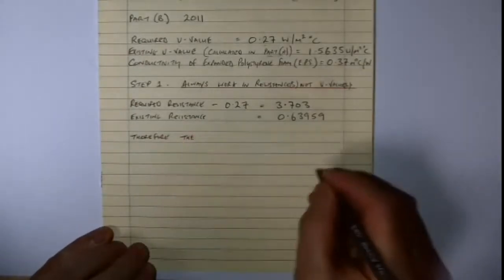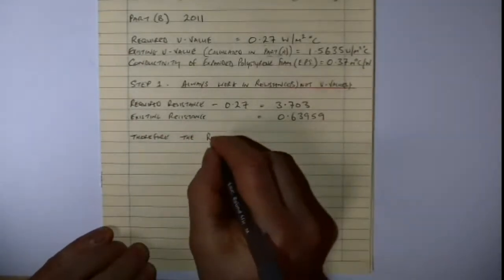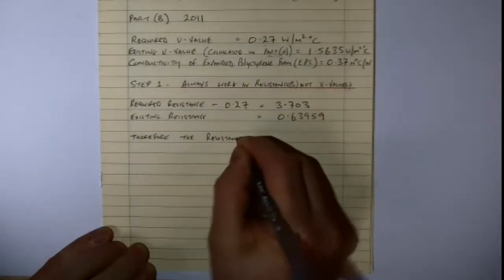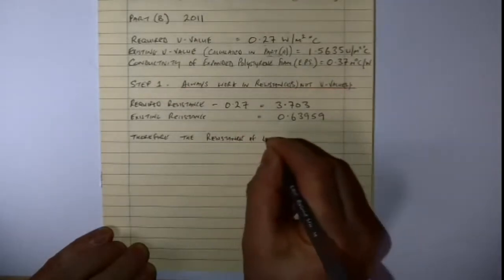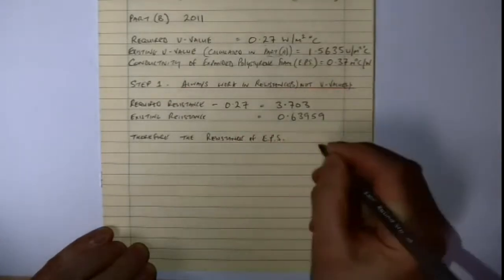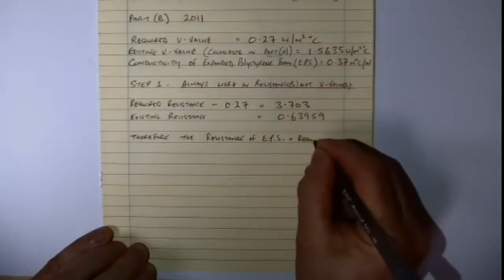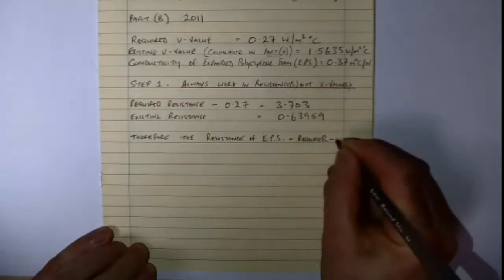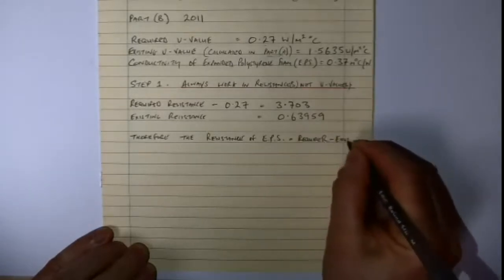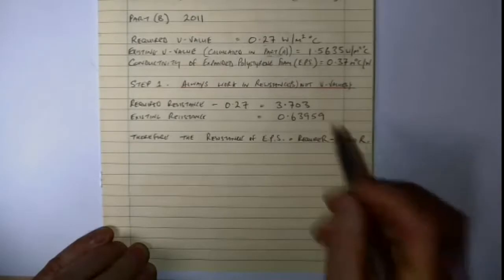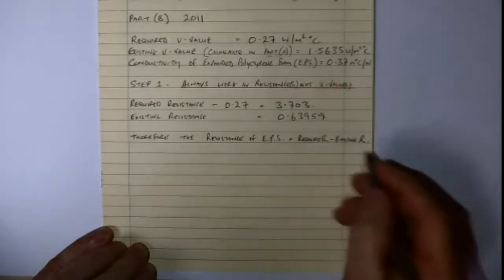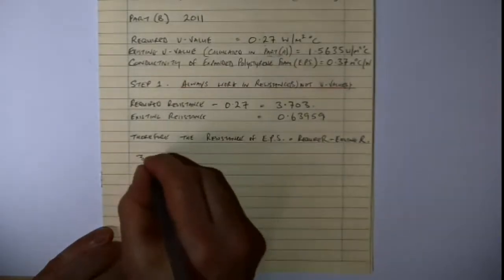So therefore, the resistance of the EPS that we require, all we've got to do is subtract one resistance from the other. As simple as that. So we're going to take 0.63959 and we're going to take that away from 3.703. So the required R and the existing R, we subtract these.